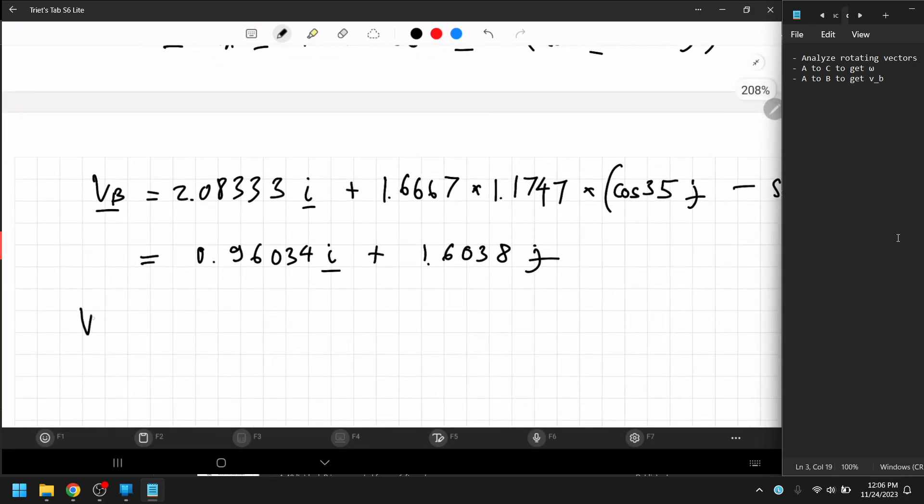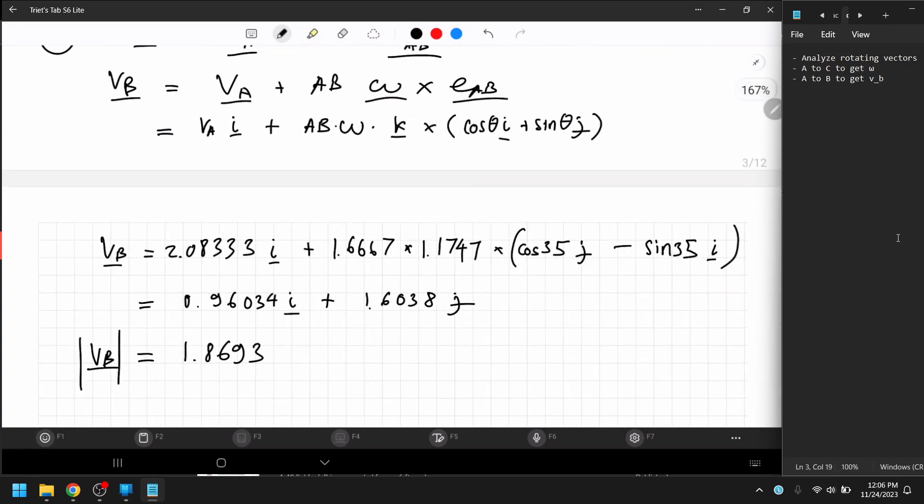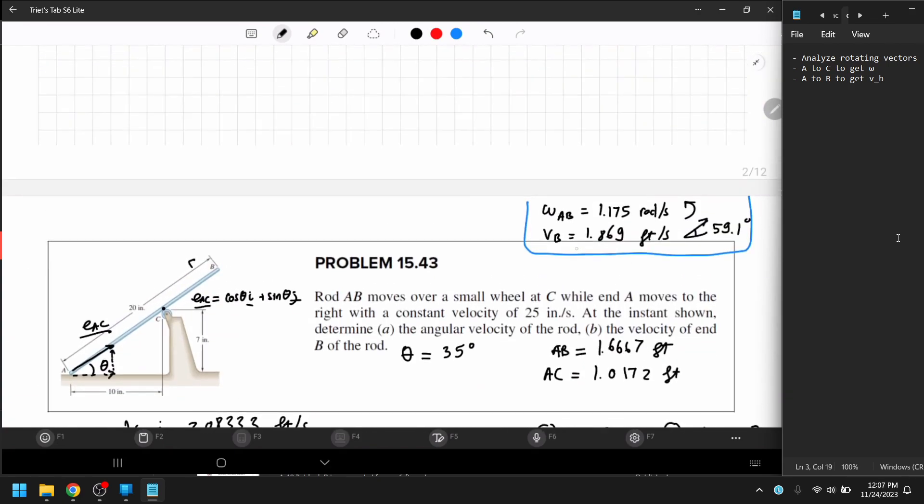then now you want to know the magnitude to confirm the answer key, it will be, one point eight six nine three, feet per second, I believe, that correct, yeah, it is correct,